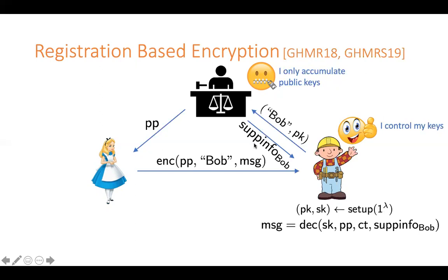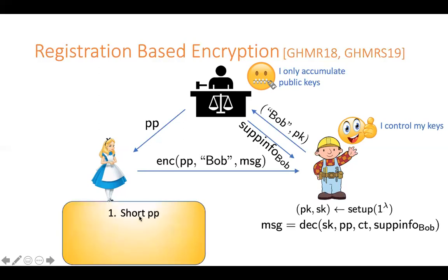Now you can ask why can't we just build this from public key encryption? We can just set the public parameters to be the set of all identity-public key pairs and that's a valid registration-based encryption. To make RBE more interesting, we would like all these parameters to be succinct and all the algorithms to be efficient. By that I mean all the parameters should have at most polylogarithmic size in terms of overall number of users, and all the algorithms have to run in polylogarithmic time. We would also like short supplement information, and when more and more users are registered, the supplement information should be updated at most logarithmic times in terms of number of users.